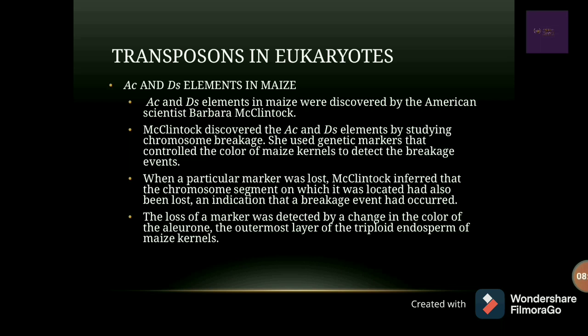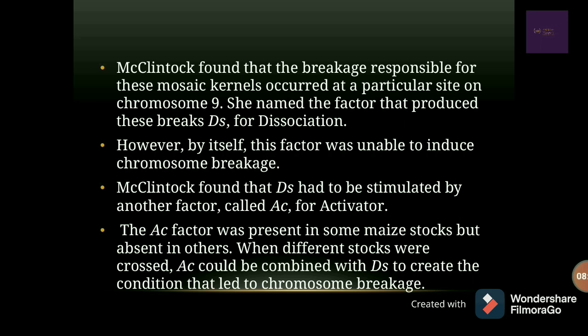The aleurone is the outermost layer of the triploid endosperm of maize kernels. McClintock found that the breakage responsible for the mosaic kernels occurred at a particular site on chromosome number 9. She named the factor that produced these breaks as DS, which stands for dissociator.